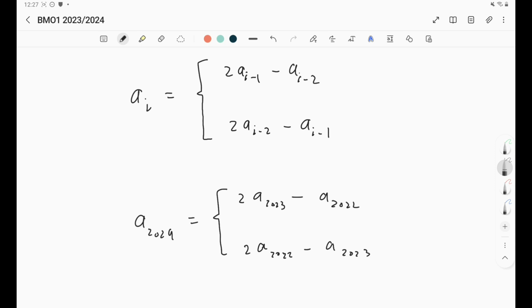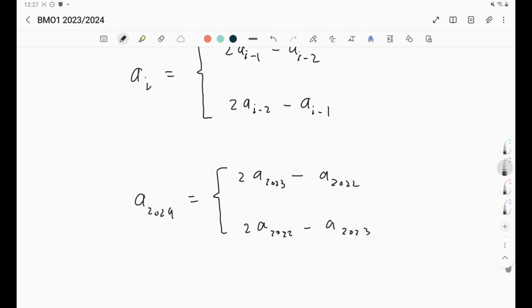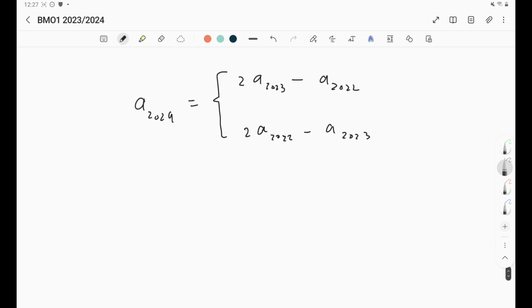So something nice we can do is simply subtract a_2023 from everything here, because we are interested in this difference as it's either one or negative one. It's better than just writing the equation directly. So a_2024 minus a_2023 equals, and of course here now if we subtract a_2023, then we don't have the 2 anymore, so it's just a_2023 minus a_2022.